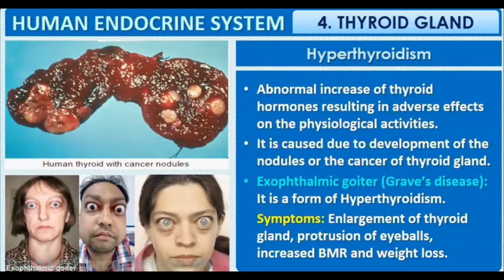In hyperthyroidism, the T3 and T4 hormones are present in larger quantities, causing our metabolism to increase. This condition can be caused by excess iodine or by nodular cancer development in the thyroid gland. There is an abnormal increase of thyroid hormones resulting in adverse effects on physiological activities.